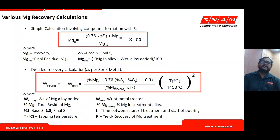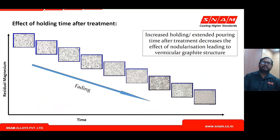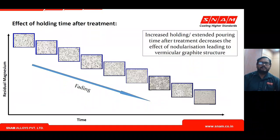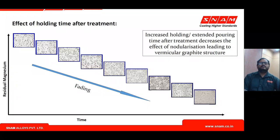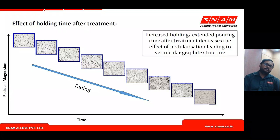The effect of holding time after treatment: residual magnesium keeps decreasing over time — this is called fading. Fading means the loss of potency. Proportionally, nodularity for the same section thickness also decreases with time. An optimum holding or pouring time must be established per foundry, per casting, and per section thickness, based on losses occurring during treatment and pouring.